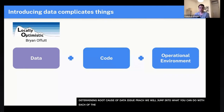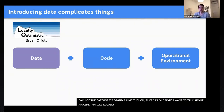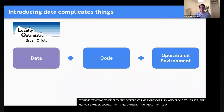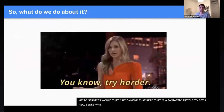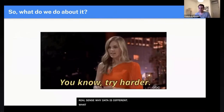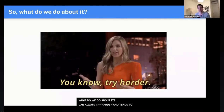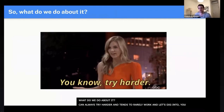Before jumping in, there's a great article on Locally Optimistic by Brian Uffoot that talks about why data systems are slightly different from and more complex — more prone to issues — than the microservices world. I recommend that read. It's a fantastic article to get a real sense of why data is different. And then — could always try harder, but that tends to rarely work. So let's dig into determining root cause.